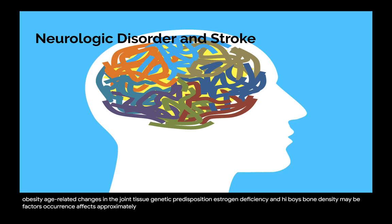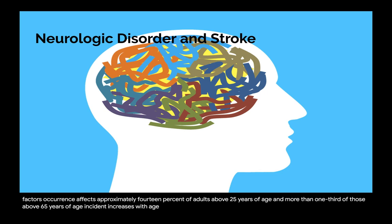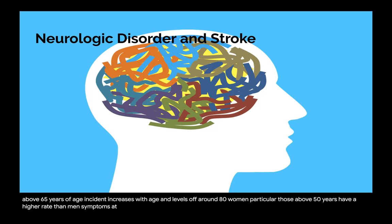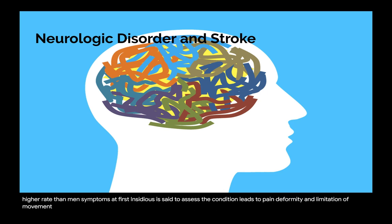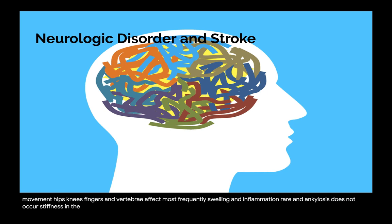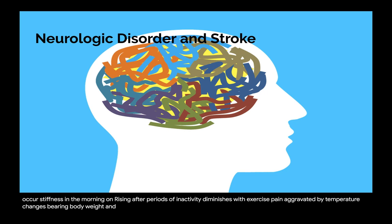Osteoarthritis affects approximately 14% of adults above 25 years of age, and more than one-third of those above 65. Incidence increases with age and levels off around 80. Women, particularly those above 50, have a higher rate than men. Symptoms are at first insidious, leading to pain, deformity, and limitation of movement; hips, knees, fingers, and vertebrae are most frequently affected. Swelling and inflammation are rare and ankylosis does not occur. Stiffness in the morning diminishes with exercise. Pain is aggravated by temperature changes, bearing body weight, and strenuous activity.